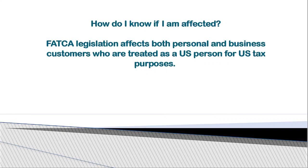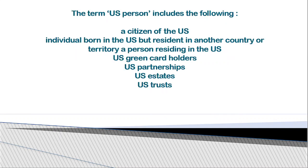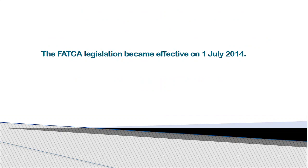Both individuals and business customers are required to have this information captured and sent back to the US. The following persons are covered under FATCA: citizens of the US, persons born in the US but residing in any other country, US green card holders, US partnerships, US estates, and US trusts. If any of these persons are investing their wealth outside the US and the relevant country is part of the agreement, their information must be shared with the US government in a standard format on an annual basis.